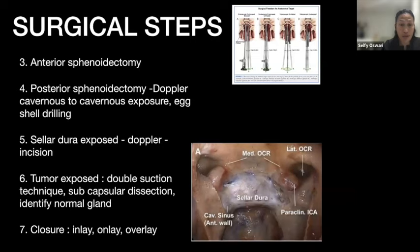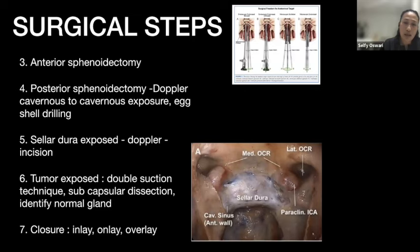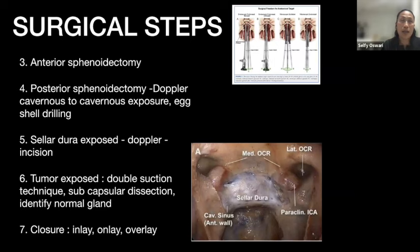After exposing the tumor, I use a double-suction technique rather than curettes unless needed. After internal decompression, I use subcapsular dissection to finally identify the normal gland, trying my best to preserve it and avoid hormonal disturbance. For closure: inlay-only overlay technique—dual substitute material placed under the dura as the inlay, mucosa from the cut middle turbinate as the only, and the vascularized nasoseptal flap as the overlay.